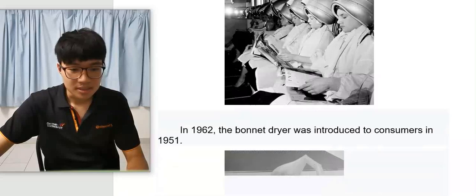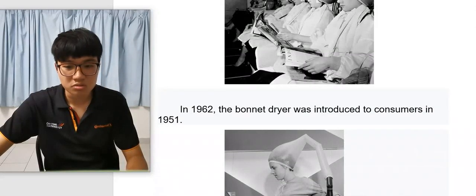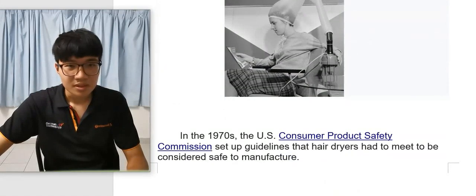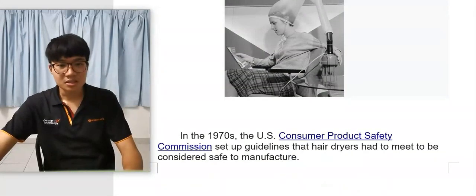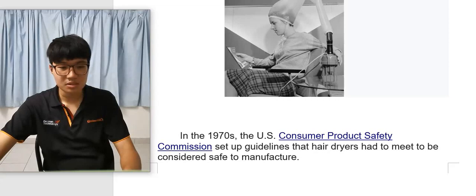In 1962, the bonnet dryer was introduced to consumers in 1951. In the 1970s, the U.S. Consumer Products Safety Commission set up guidelines that hair dryers had to be considered safe to manufacture.